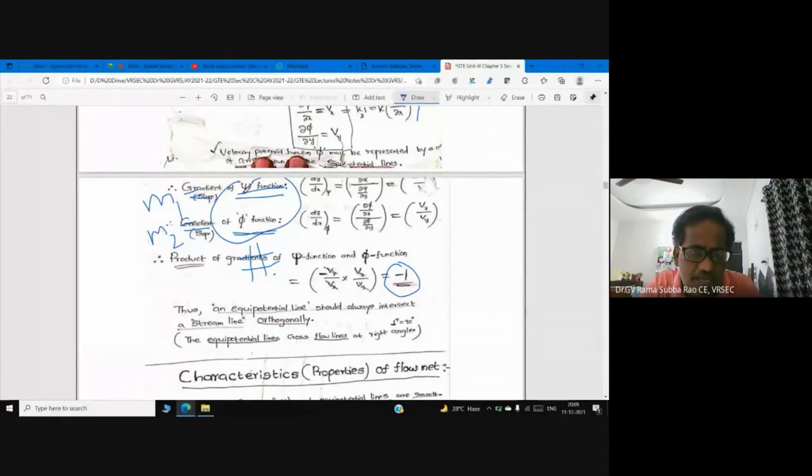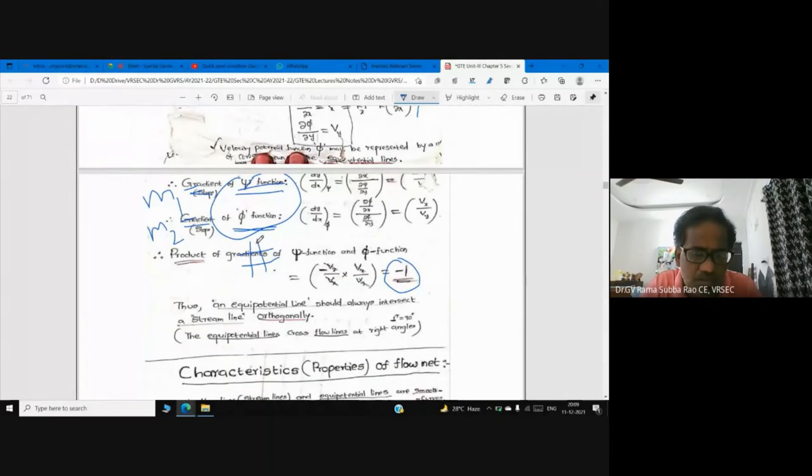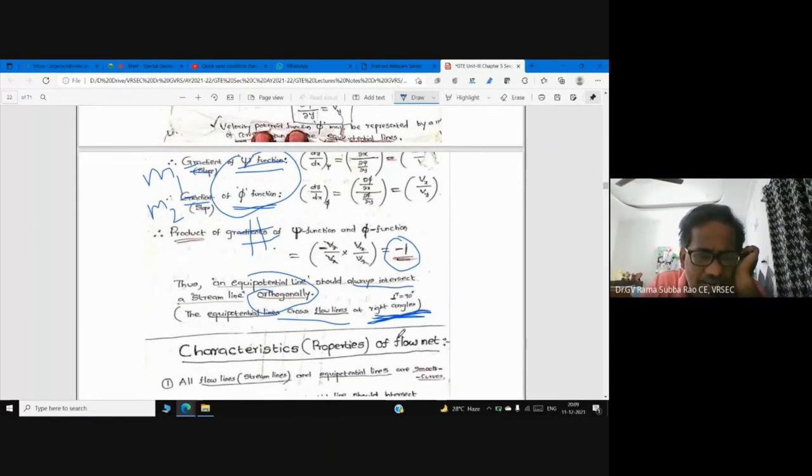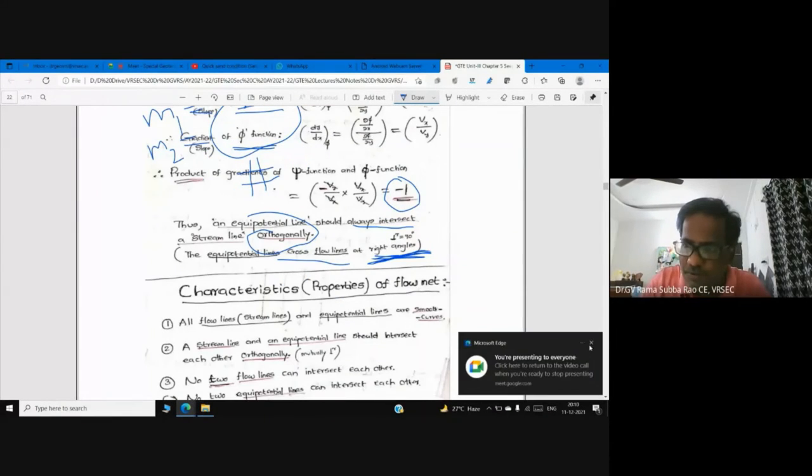Your stream lines and equipotential lines always intersect orthogonally. If you're not happy with orthogonally, they cross at right angle, 90 degrees.